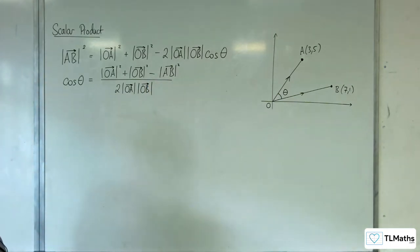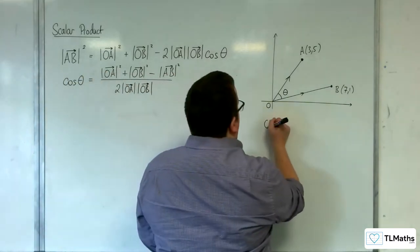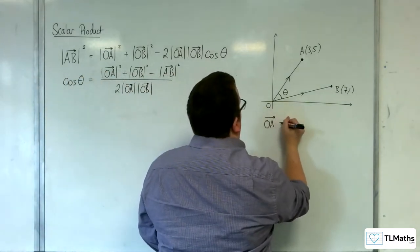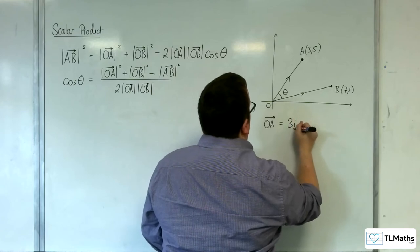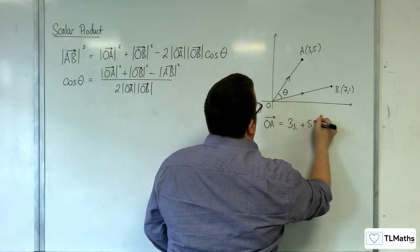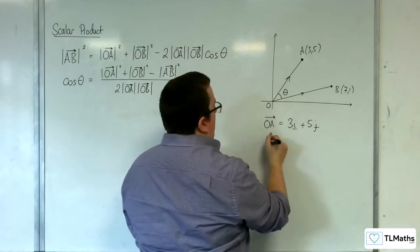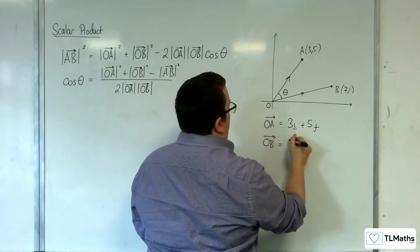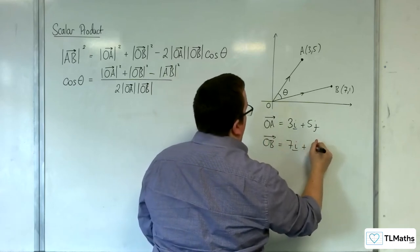So in our case, what we've got is that OA would be equal to, and I'll write it in component form, 3i plus 5j, and OB is 7i plus j.